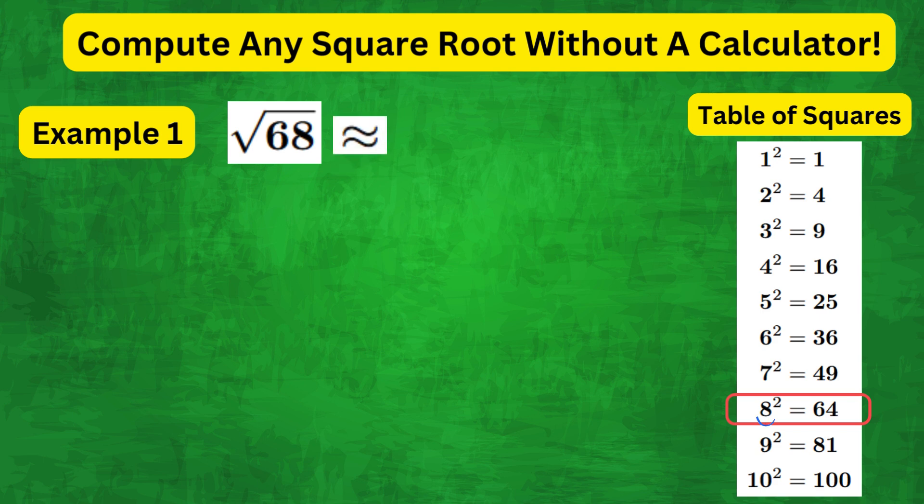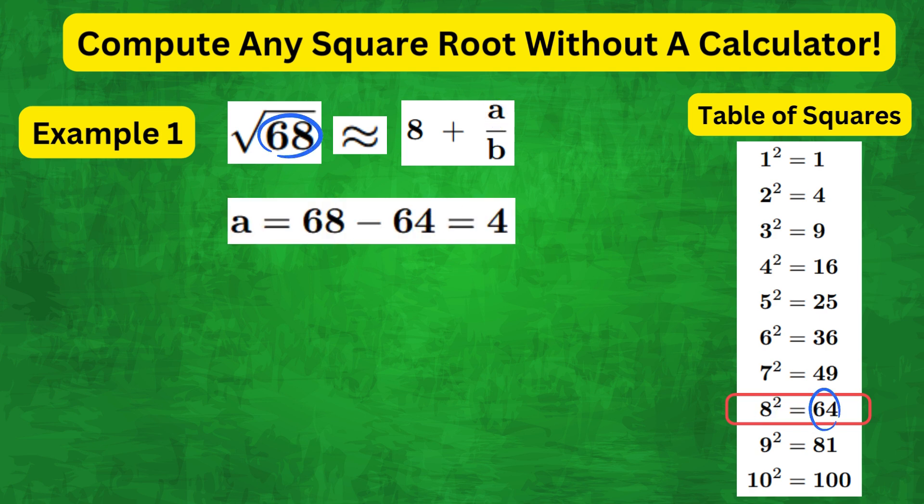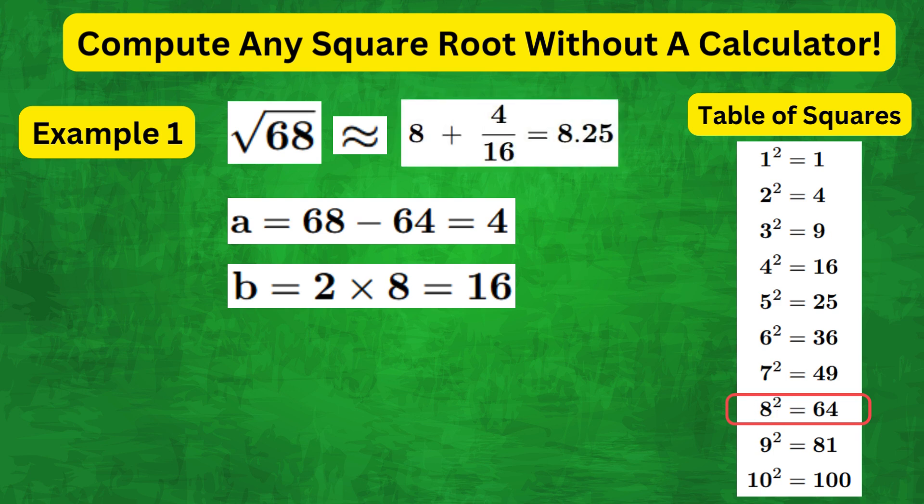So, our estimate would be 8 plus some correction fraction. The numerator of this fraction can simply be given by 68 minus 64, which is 4, and the denominator is simply 2 times 8, which is 16. This works out as 8.25.